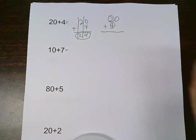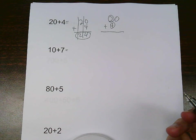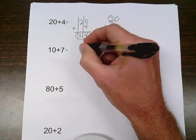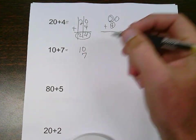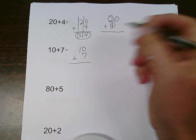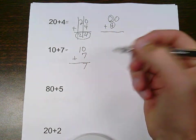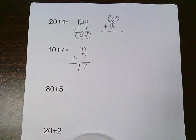So once again, I line the place values up vertically, put my largest number up top, line ones up with ones, and simply add them up. 7 plus 0 is 7, 1 plus nothing is 1, 17.